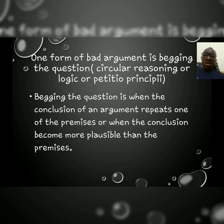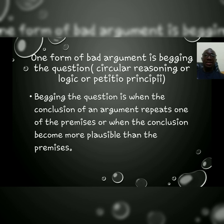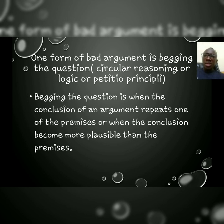Now, there is one form of a bad argument that we need to be worried about. That is begging the question. Some people call it circular reasoning or circular logic, and the other Latin name, Petitio Principii. Now, what is begging the question? Begging the question is a form of bad argument whereby the conclusion repeats one or more of the premises. Or, begging the question can come in the form whereby the conclusion becomes more plausible than the premises.